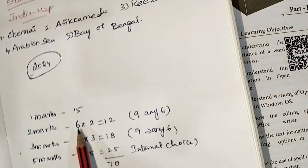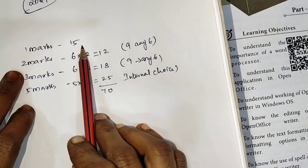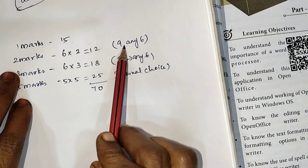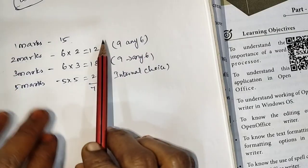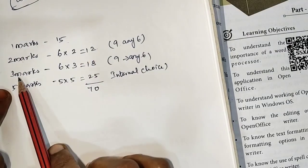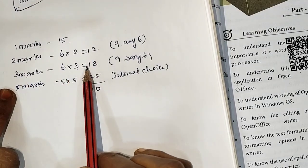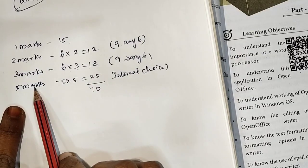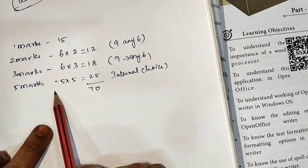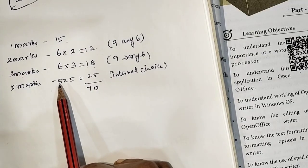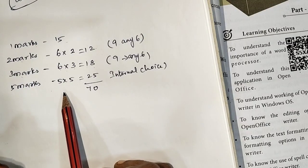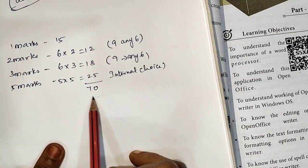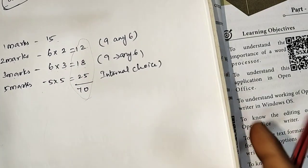To summarize the exam paper structure: 15 one-mark questions, 6 × 2 = 12 two-mark questions (choose any six), 6 × 3 = 18 three-mark questions (choose any six), and 5-mark questions with internal choice (either A or B), five questions = 25 marks. Overall total is seventy marks.